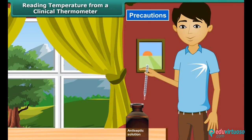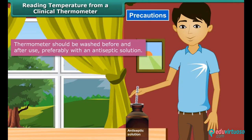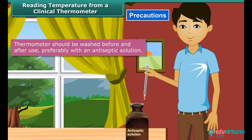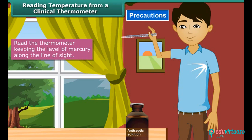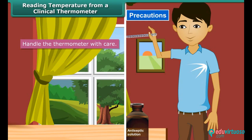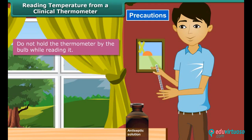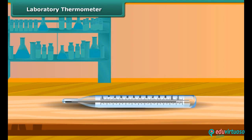Precautions to be observed while reading a clinical thermometer are as follows: the thermometer should be washed before and after use, preferably with an antiseptic solution; ensure the mercury level is below 95°F; read the thermometer keeping the level of mercury along the line of sight; handle the thermometer with care — if it hits against a hard object, it can break; do not hold the thermometer by the bulb while reading it.